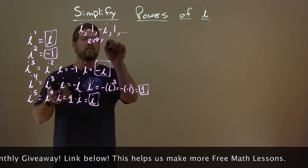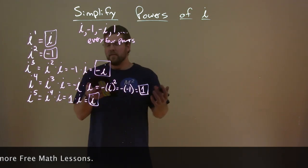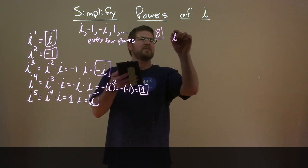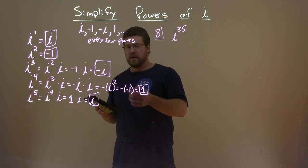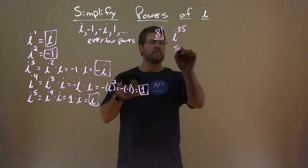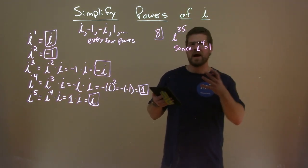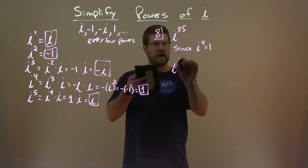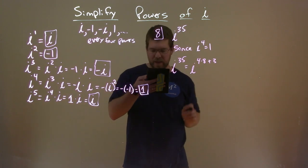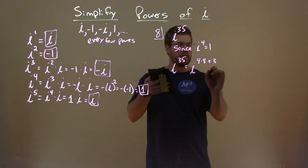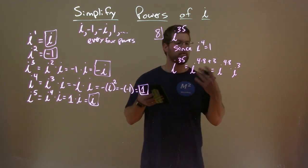So every four powers we cycle through. Now if we want to evaluate a common example — what's i to the thirty-fifth power? Well, we know i to the fourth is one. Since i to the fourth power equals one, we can try to find how many fourth powers are in i to the thirty-fifth. So i to the thirty-fifth power is the same as i to the four times eight plus three, because four times eight plus three equals thirty-five.